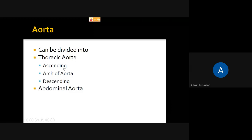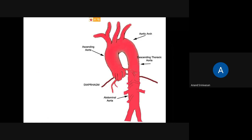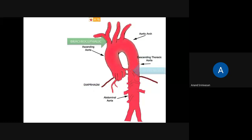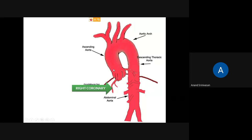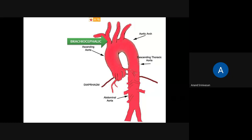The right coronary artery and left coronary artery both arise from the ascending aorta. From the arch of the aorta, on the right side, there is an artery called the brachiocephalic artery — 'brachio' means arm and 'cephalic' means head. After passing through the diaphragm, the aorta becomes the abdominal aorta.